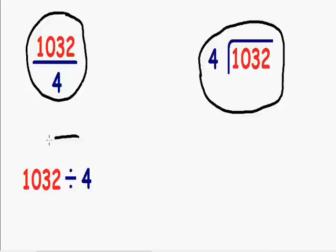And sometimes they might give you the problem like this, 1032 with the division symbol divided by 4. Notice how the first number, the 1032, goes on the inside of the long division and the second number goes on the outside of the long division.